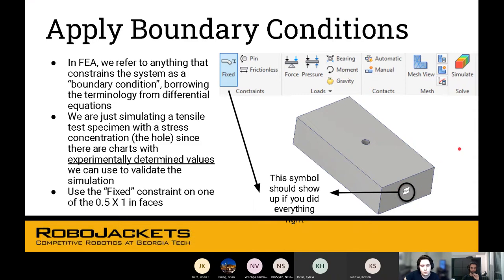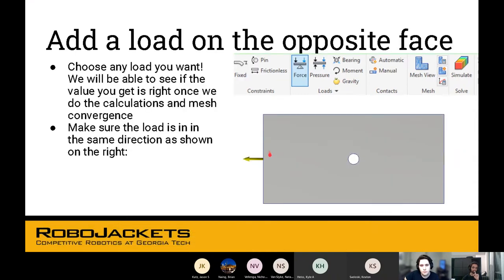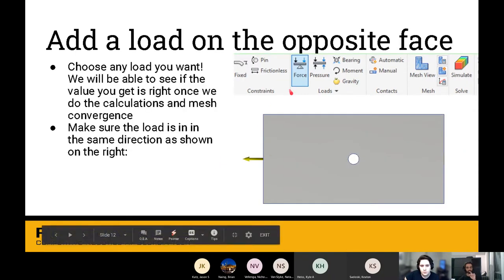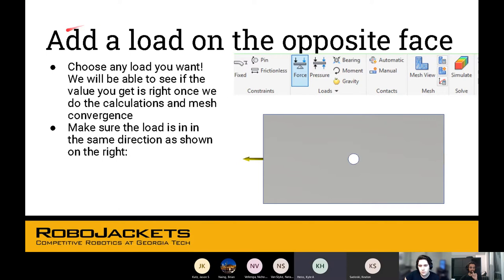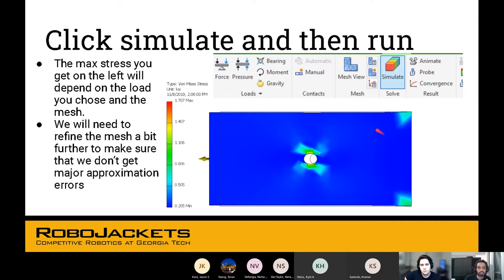You set the fixed constraint on one end. On the other end, you apply a load. You can select force here. We're going to look at a load that points outwards so that the part is in tension. If you apply a load that points inwards, the part will be in compression and that will lead to buckling, which is a bit complex for us to look at right now. Make sure your load is pointing outwards.